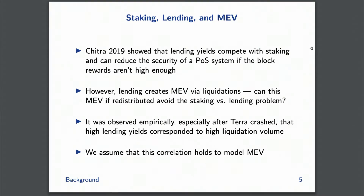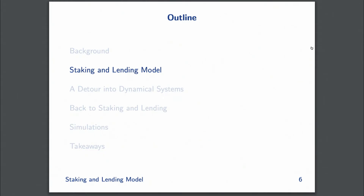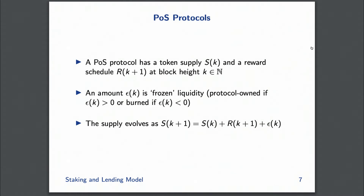It's some type of slight autoregressive model. Assuming this correlation holds, we can reason about how things evolve. The proof-of-stake protocol has a token supply S(k), a block reward R(k+1) as the reward schedule, and an amount of protocol-owned liquidity Epsilon(k) that is either burned — like EIP-1559 — or protocol-owned, where the DAO Treasury takes some fraction of each block reward.